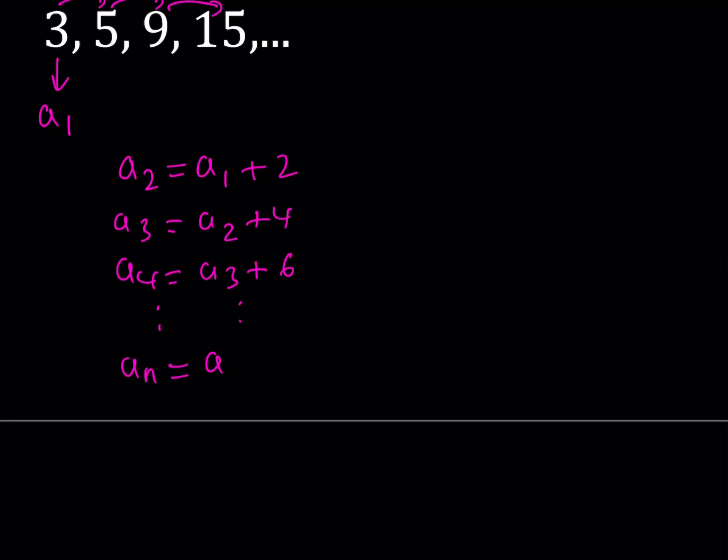So I want to get a sub n which is the nth term from a sub n minus 1. Then all I need to do is add 2 times the quantity n minus 1. Notice that we're adding 6 to a3 which is 2 times 3. So that's how the rule goes. But I'd like to write it in a nicer way.